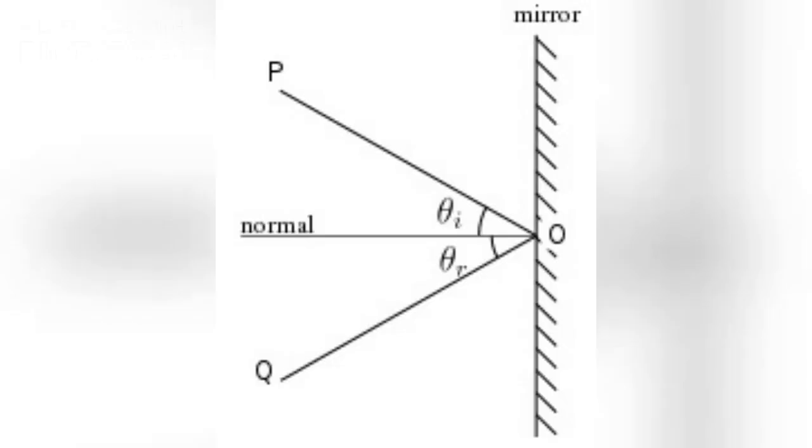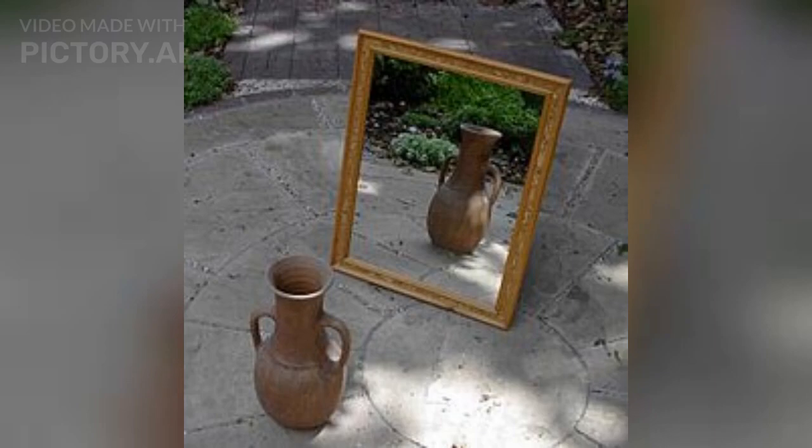The Basics of Reflection: When light hits a surface, it can either bounce back or get absorbed. This bouncing back of light is what we call reflection.